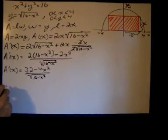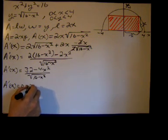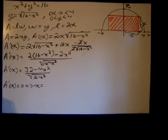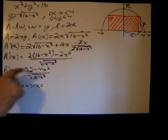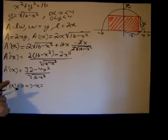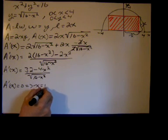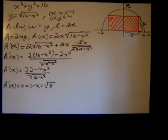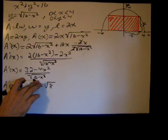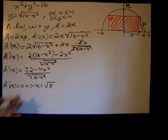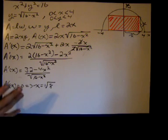Setting A prime of x equal to 0 means setting the numerator equal to 0. Moving 32 to one side and dividing by negative 4, then taking the square root of both sides, we get x equals plus or minus the square root of 8. We only care about the positive value, so x equals the square root of 8. We also check where A prime does not exist — where the denominator equals 0, which is at x equals 4 — but we already restricted x to be less than 4, so we don't need to worry about that.